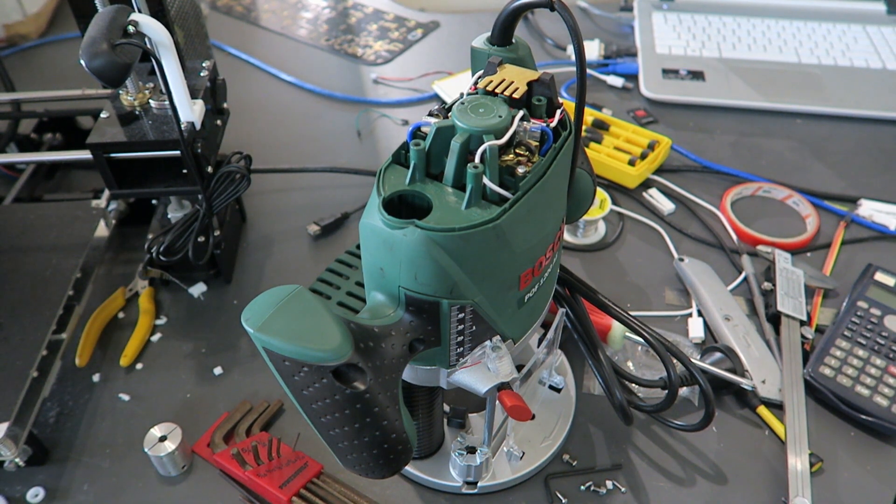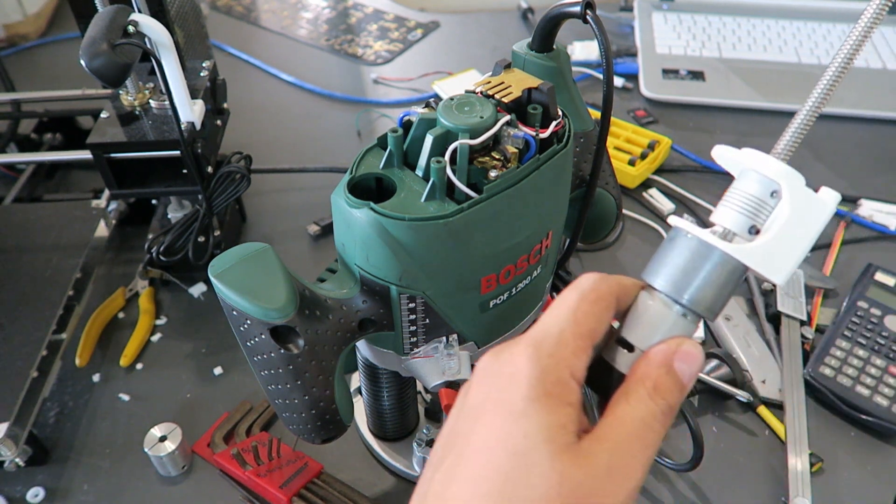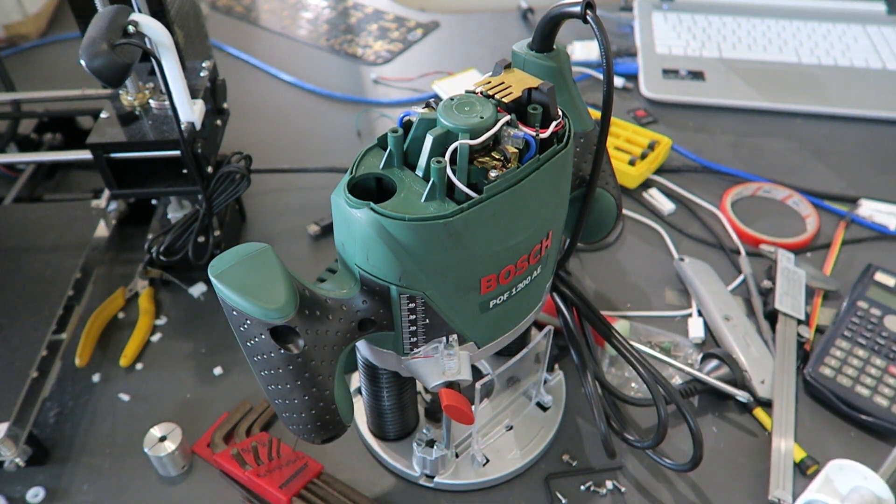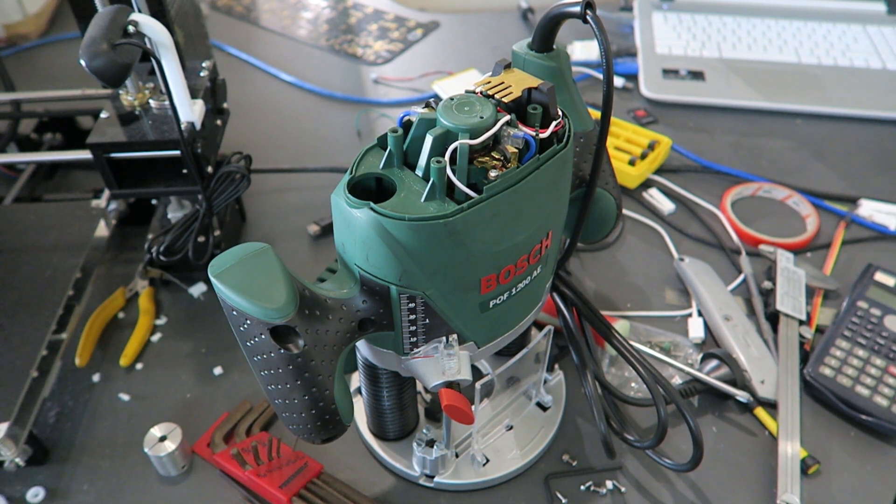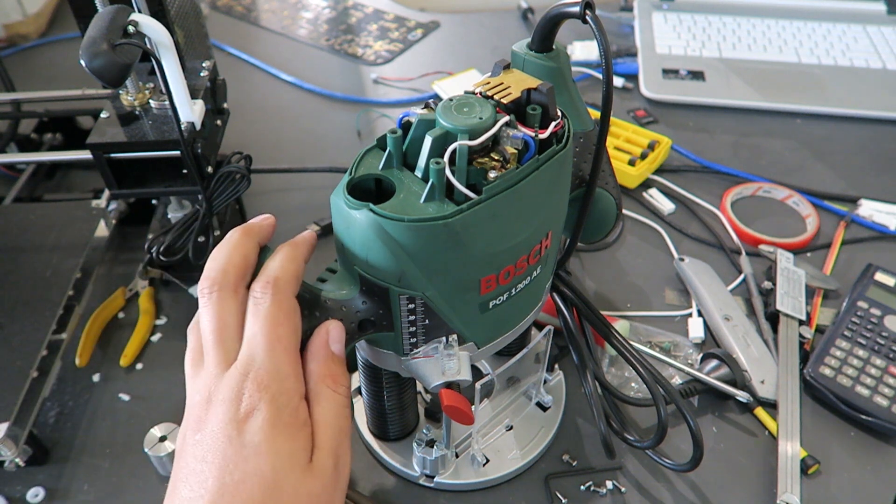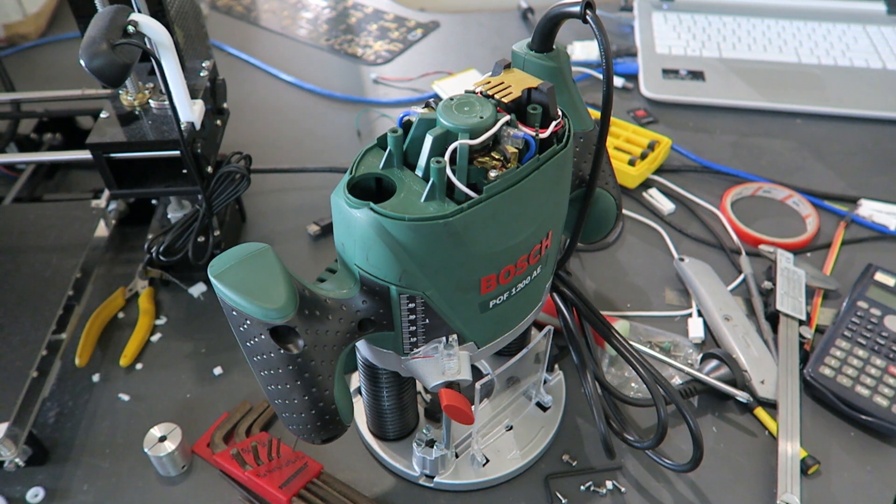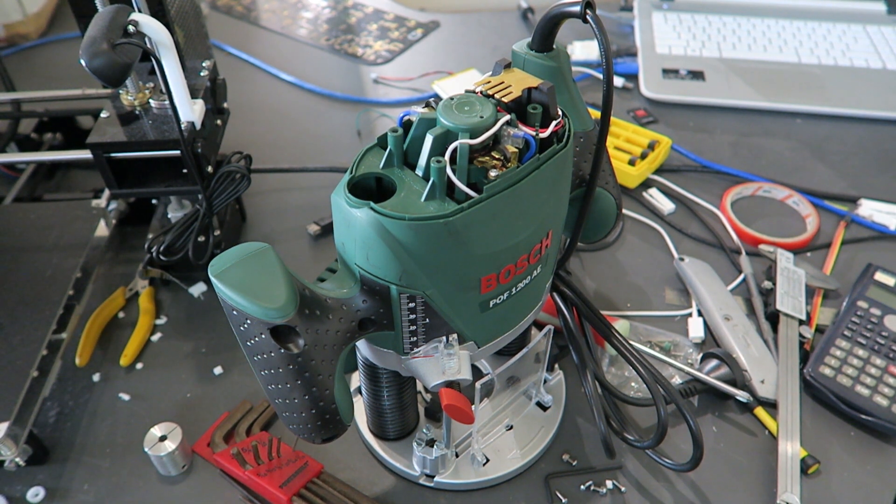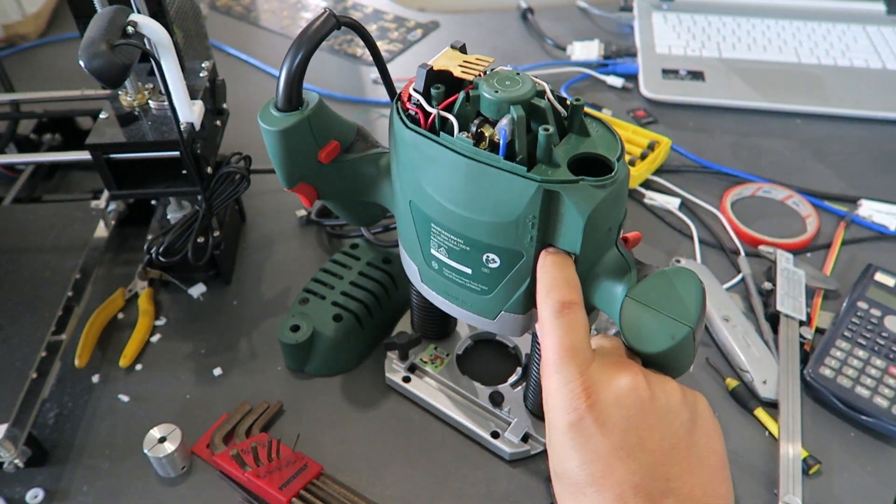Hey guys, Ned here. Today I decided that I should add a z-adjust motor to my router for my Maslow CNC project. I got the Bosch POF 1200AE which doesn't have a height adjust or fine adjust on it, but the model up from it does, the 1400 does. Most of the parts are actually in here and it normally sits in here.